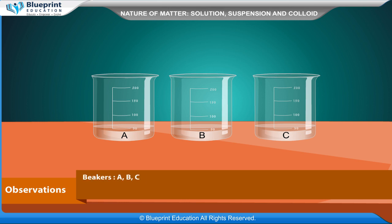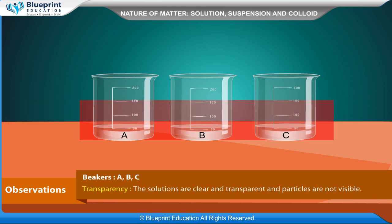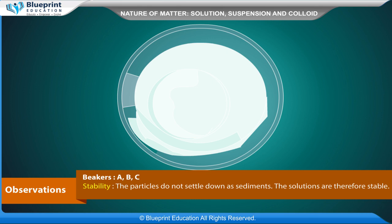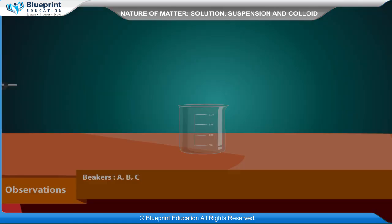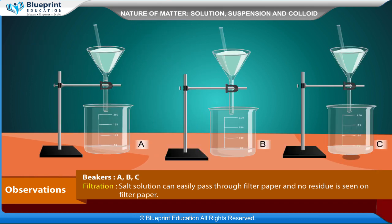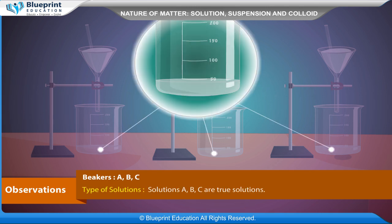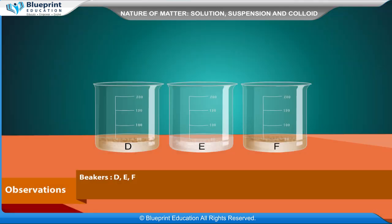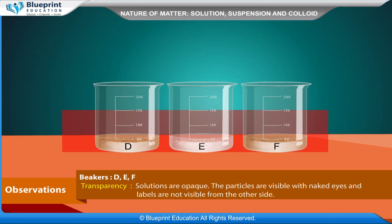Observations — Beakers A, B, C: Transparency: The solutions are clear and transparent and particles are not visible. Stability: The particles do not settle down as sediments; the solutions are therefore stable. Filtration: Salt solution can easily pass through filter paper and no residue is seen on filter paper. Type: Solutions A, B, C are true solutions.